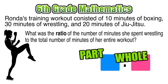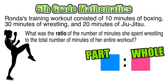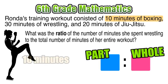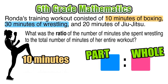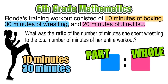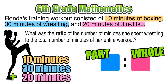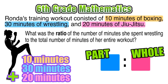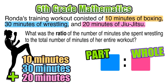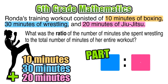We can think of the whole as her whole entire workout — how much time she's been working out. She spent 10 minutes boxing, 30 minutes wrestling, and 20 minutes practicing jiu-jitsu. If we add those three values together, that sum will be our whole. When we add 10 plus 30 plus 20, our result is 60, so her whole workout lasted 60 minutes.